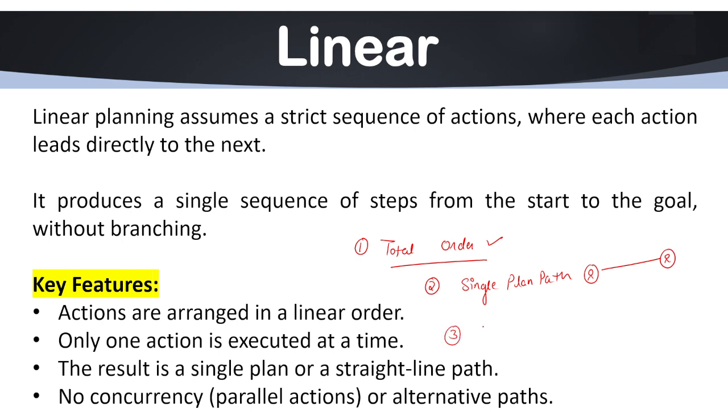Next feature is it does not have any branching system. As it has a sequential flow of data, no branching is allowed here. No decision points or forks in the plan are allowed.